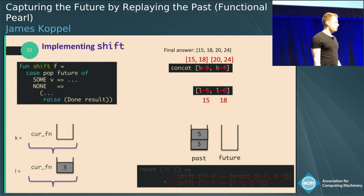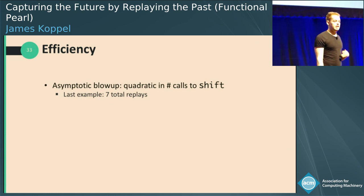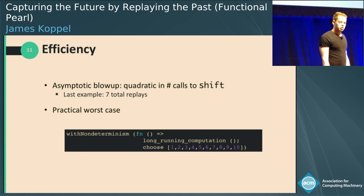This, by the way, is an example of how you do nondeterminism in terms of delimited control. And you can generalize this to any monad using Filinski's construction. Obviously that has some efficiency problems — to get the first value we already need to do three replays, and in total we need to do seven replays, even though there are only four paths through this nondeterministic function. The nondeterministic construction would only use four, but here we use seven. We do fix that in the paper.